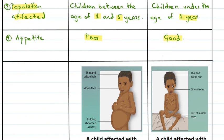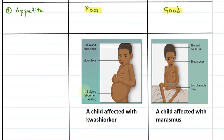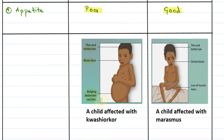Here we can see images of affected children. This child is affected with Kwashiorkor — we can see thin and brittle hair. The children have a moon face and their abdomen is bulging or swelling, which is known as ascites.